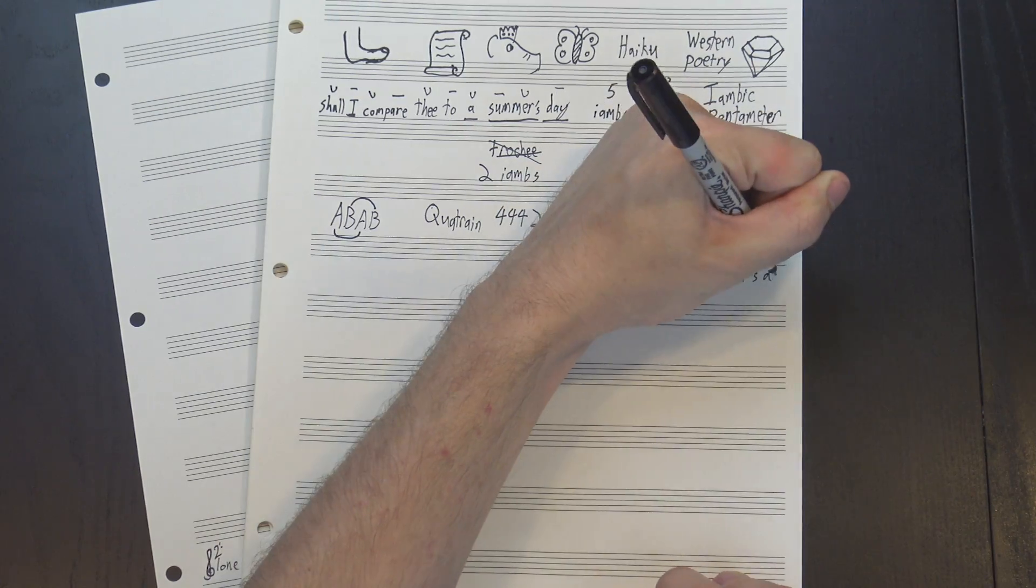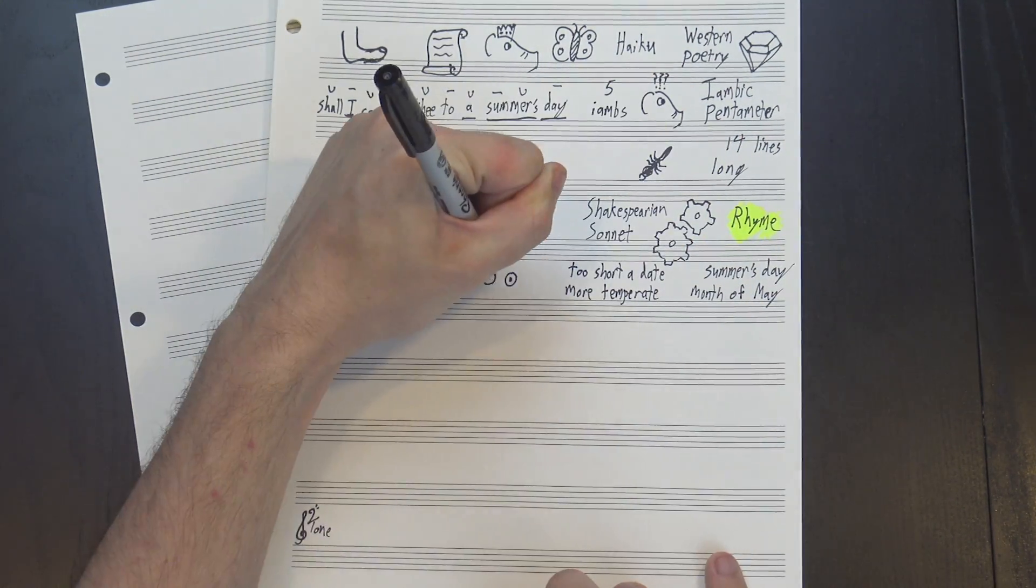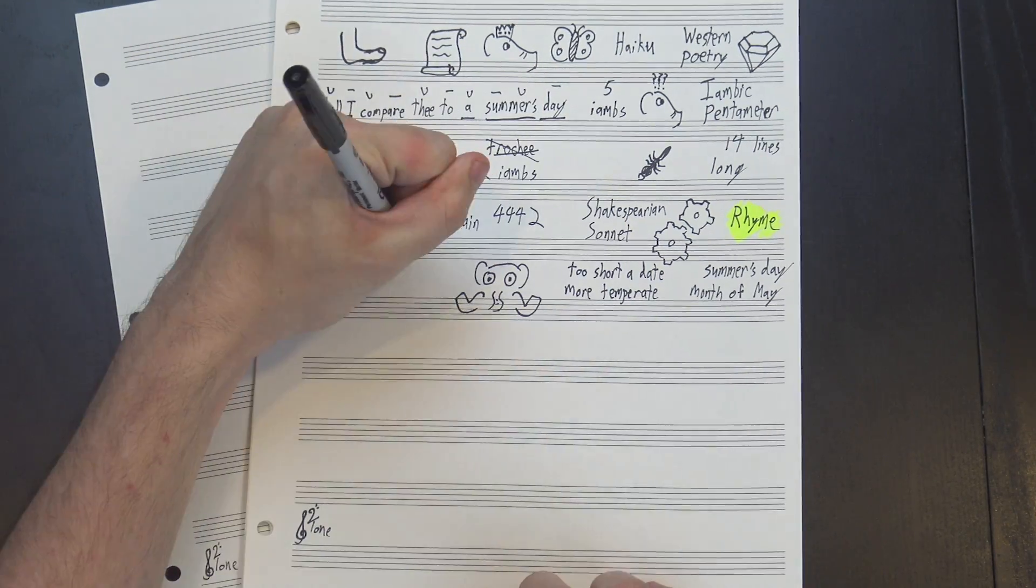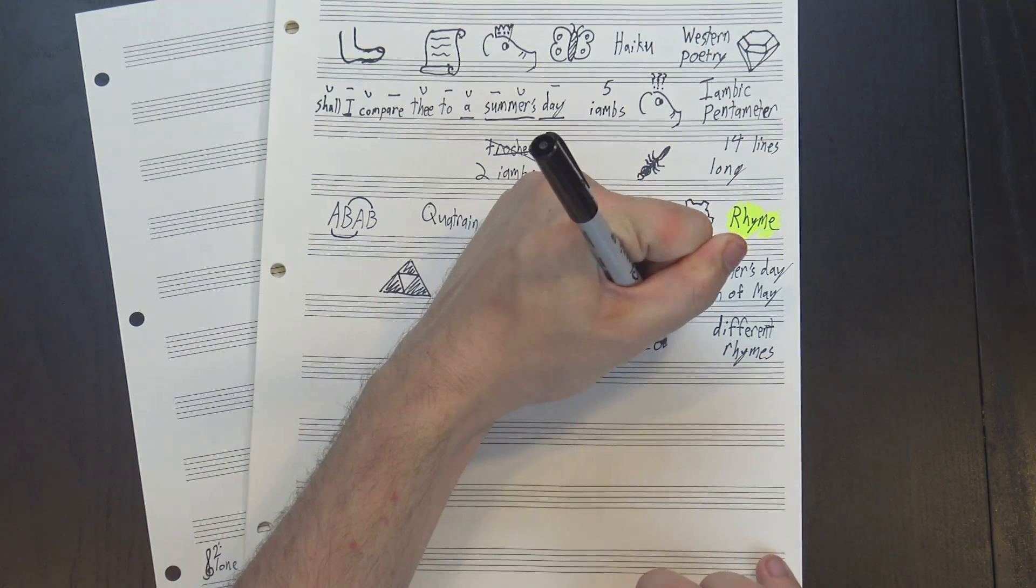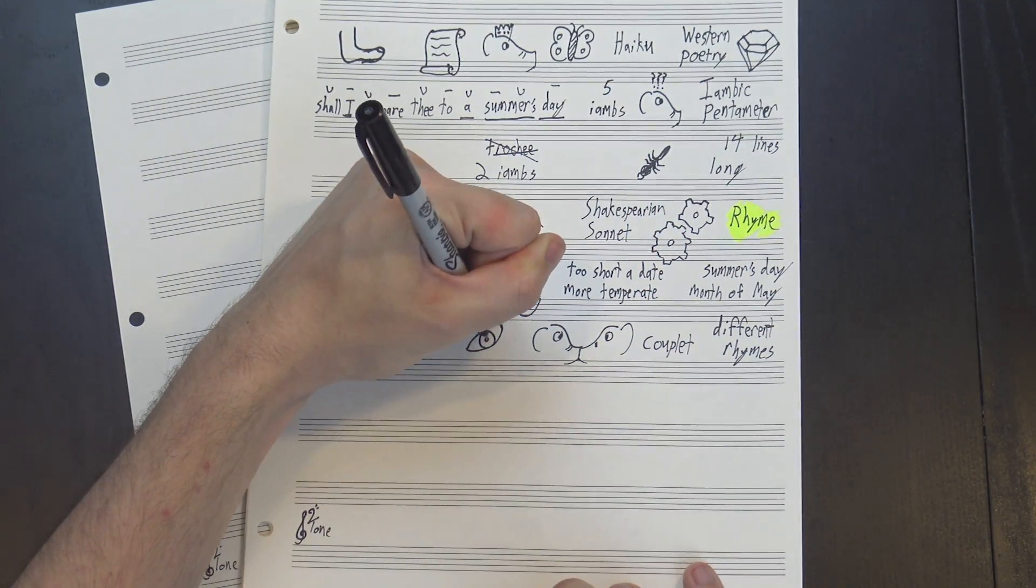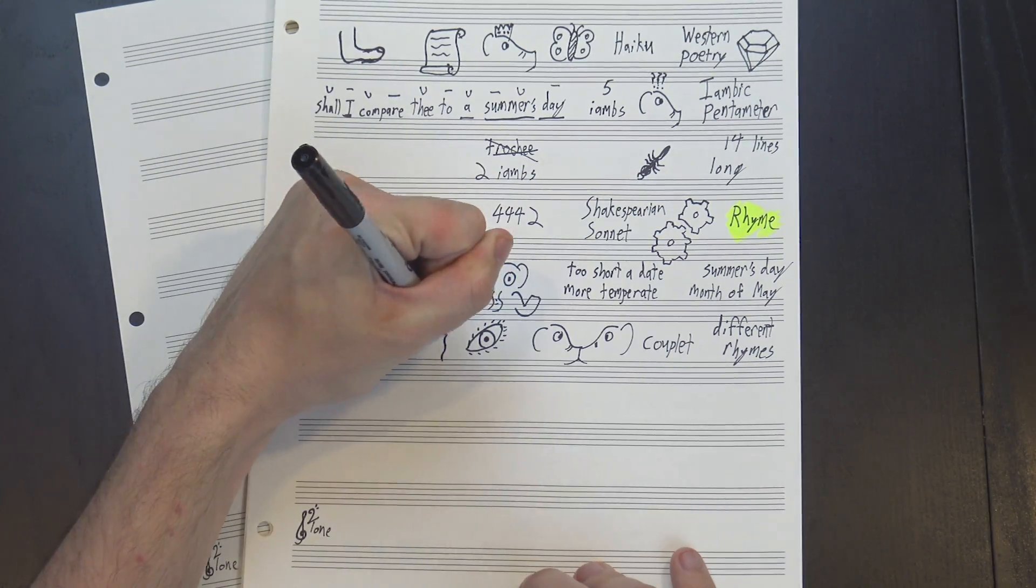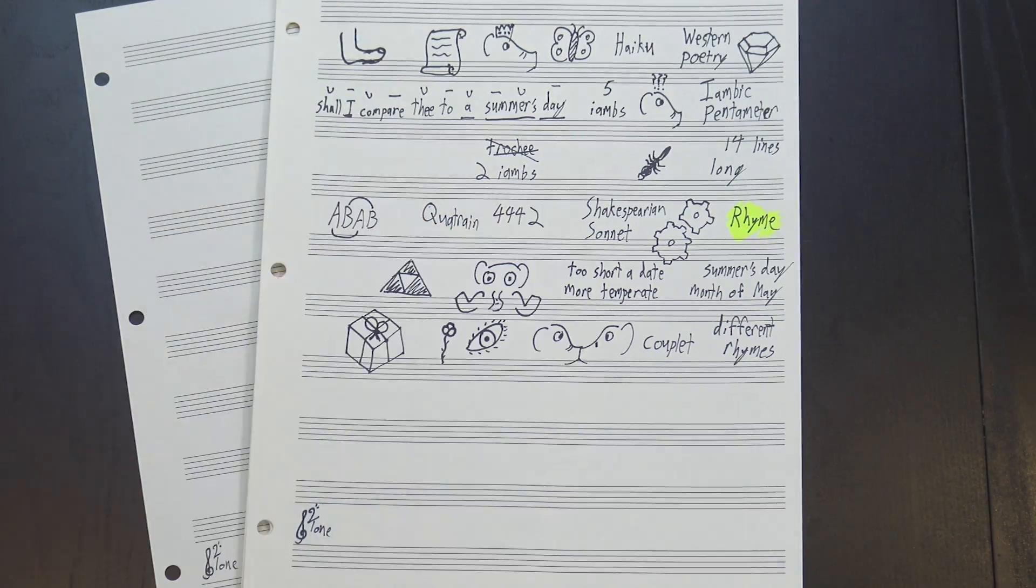If we look back at sonnet 18, we see summer's day rhyming with month of May, and too short a date rhyming with more temperate, at least if you pronounce it like Shakespeare would've. The Shakespearean sonnet features three of these quatrains, each with its own set of endings, and then wraps up with a couplet, which is just two lines that rhyme. In sonnet 18, we have so long as men can breathe or eyes can see, so long lives this, and this gives life to thee. This final couplet helps wrap things up and signals the end of the poem.